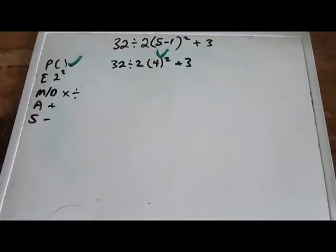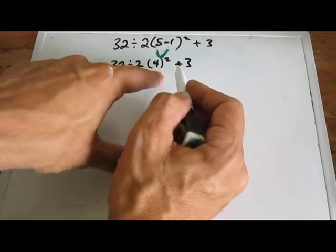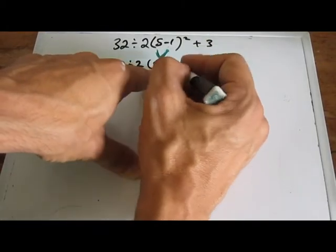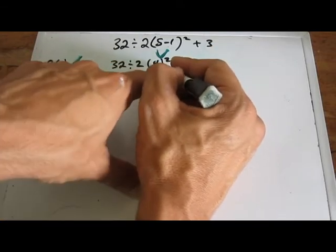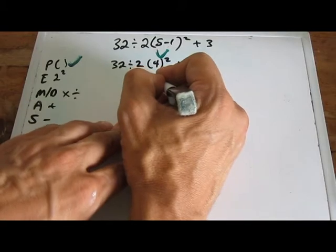And so what do we have next here? Oh, exponents. Are there any exponents? Yes, there are exponents. So that's the next thing we're going to do. We're going to take this 4 squared, because that's saying 4, that's saying square what's inside the parentheses. So that's going to be 4 times 4, which is now 16.